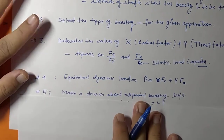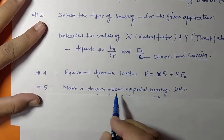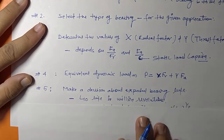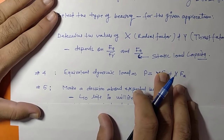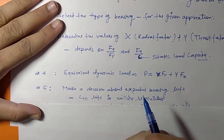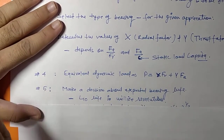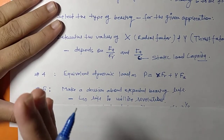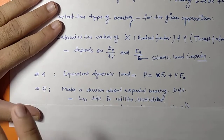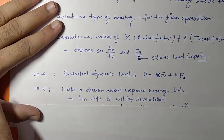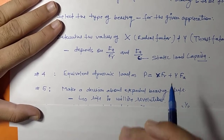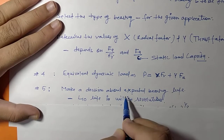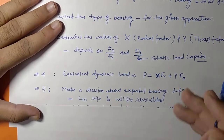After calculating the equivalent dynamic load, we decide on the expected bearing life. For automobile applications such as cars, trucks, trolleys, and railroad cars, bearing life is designated in million revolutions. For industrial applications, bearing life is designated in hours. Depending on the application, we make the decision about the expected bearing life.